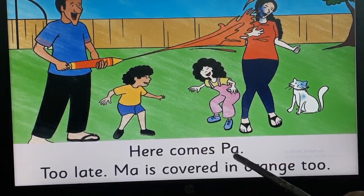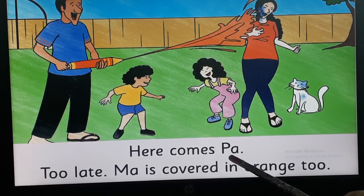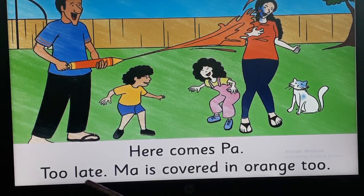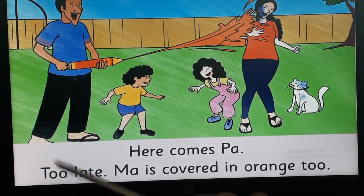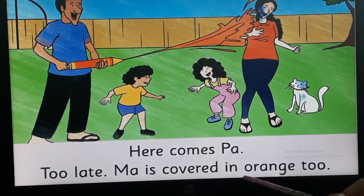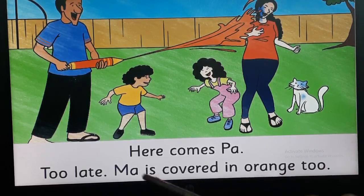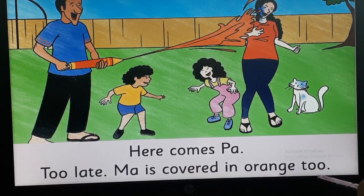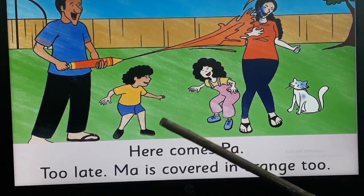Here comes — who comes in the picture? Tell me. Yes — Pa. Here comes Pa. Too — can you read the word? Yes, it is late — too late. Ma is covered in — tell me, can you complete the sentence? Ma is covered in — Orange. Very good. Now turn the page.